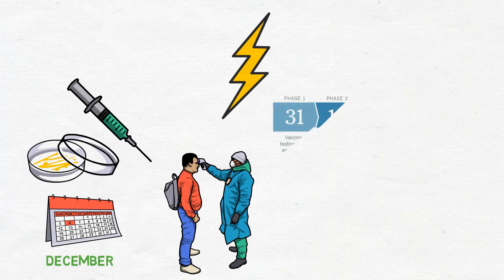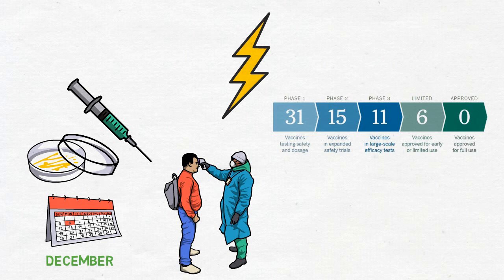When creating a vaccine, there are five stages and they look like this. Stage one, vaccines testing safety and dosage. Stage two, vaccines in expanded safety. Stage three, vaccines in large-scale efficacy tests. Stage four, vaccines approved for early or limited use. And then stage five, vaccines approved for full use. The numbers in the boxes are the number of companies that are at their respective stage, according to the New York Times, as of October 16th.